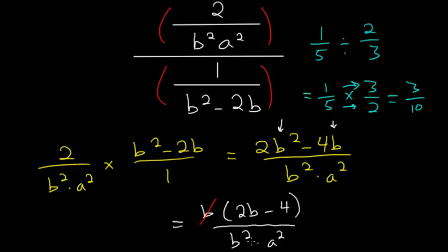So this b will cancel out with one of the b's here, so the squared goes to a single b. And what we're left with is 2b minus 4 over b times a squared. And this is as simple as it gets.